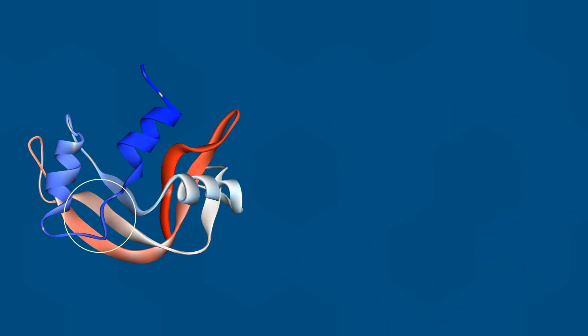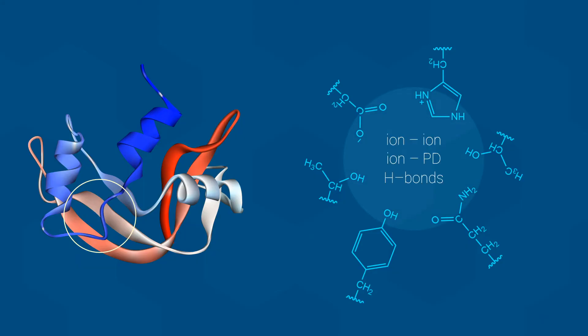In another region of the RNase structure, we can find a number of hydrophilic side chains, both charged and uncharged, packed together. These side chains can use a combination of ion-to-ion, ion-to-permanent dipole, and hydrogen bonds to interact together.